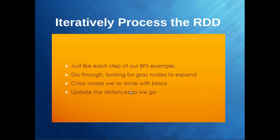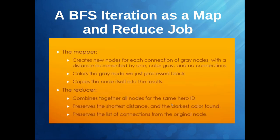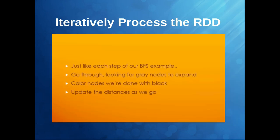Nodes we are done with get colored black. As we move from the original node to the next connecting node, the next connecting node gets distance incremented by one and color set to gray, while the original node becomes black. We implement this iterative process using a mapper and reducer job to expand hero ID connections, traverse to exploded nodes, and update colors and distances.